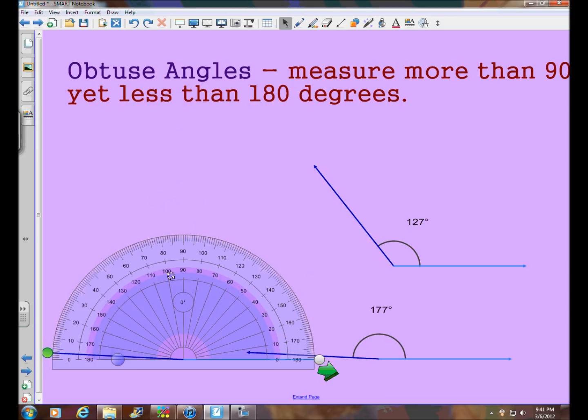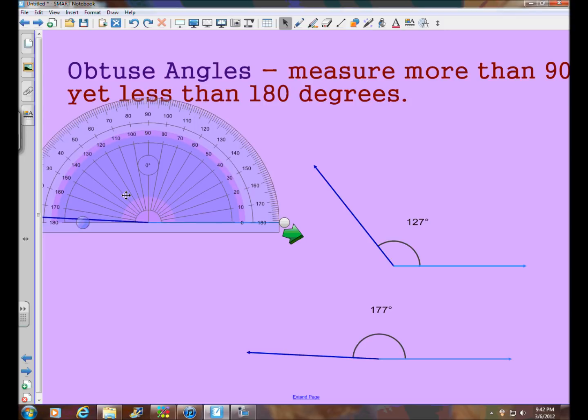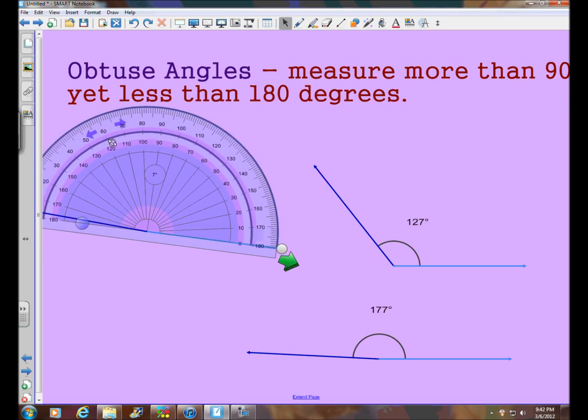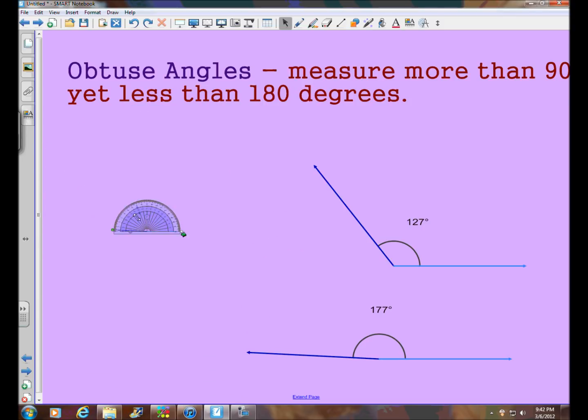And there you go. That would be an obtuse angle. Didn't mean to rotate that, so let's move that. So now we've got two different examples of obtuse angles. Clearly they are between 90 and 180 degrees. Let's move on to our last type of angle.